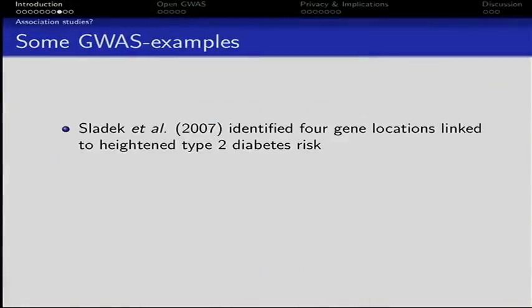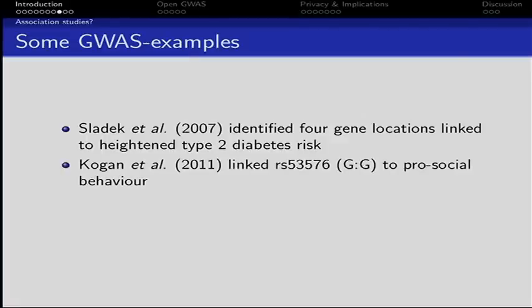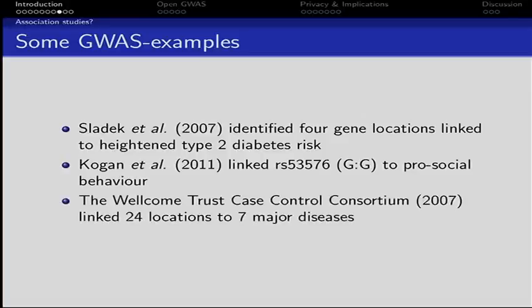Some real-life examples: Sladek et al. identified four variants linked to heightened risk to develop diabetes type 2. There's a slightly weird study by Kogan et al. which linked one SNP to pro-social behavior — it's a bit controversial. A big, good study is from the Wellcome Trust, which linked 24 of these SNPs to seven major diseases.